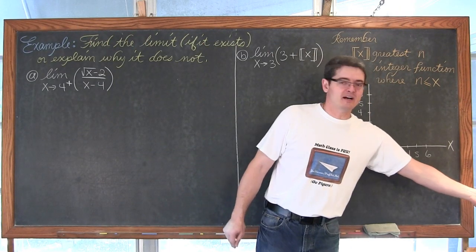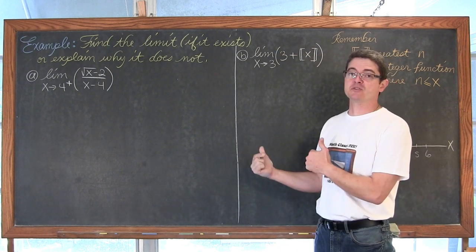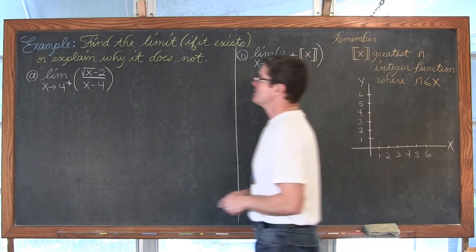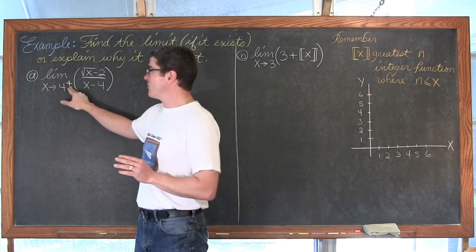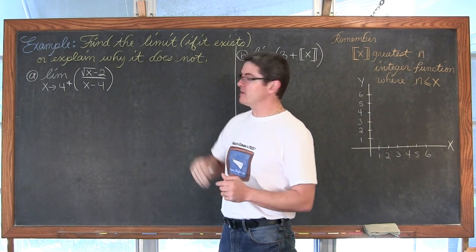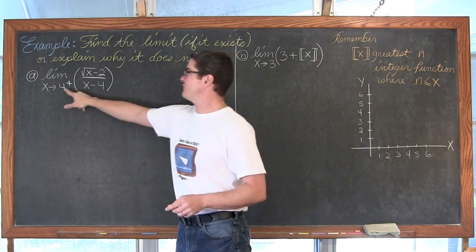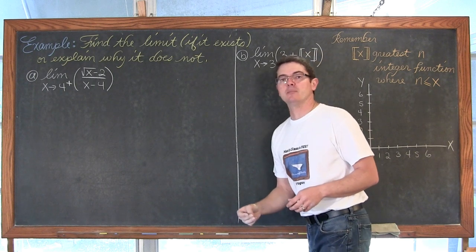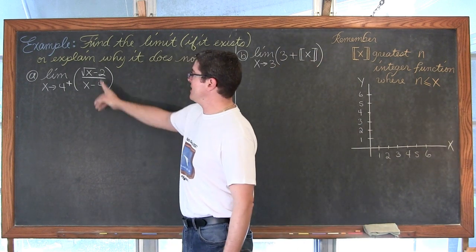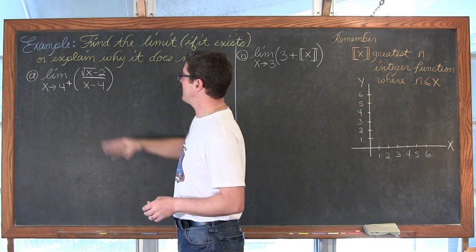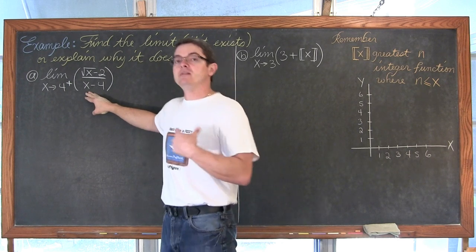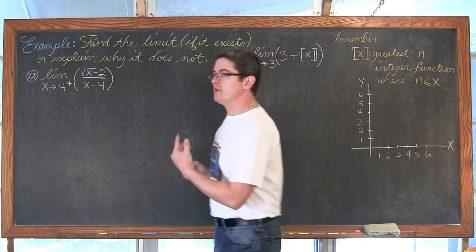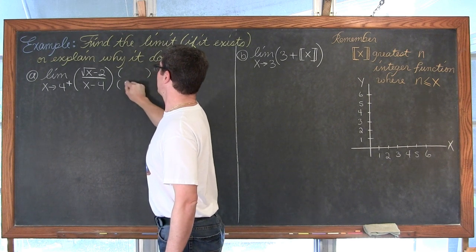There are six examples. If you have no problems finding limits you can skip the first two, but you can't test for continuity without knowing how to find a limit. For the first example, find the limit as x approaches 4 from the right of this rational function. The function is undefined at 4 — plugging in gives 4 minus 4 equals zero in the denominator. We need to manipulate it algebraically to find a function that agrees with this one everywhere except at x equals 4.